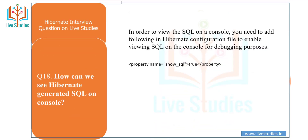Another question: how can we see Hibernate-generated SQL on the console? In order to view the SQL on the console, you need to add the following property to the Hibernate configuration file to enable viewing SQL for debugging: set property show_sql to true.